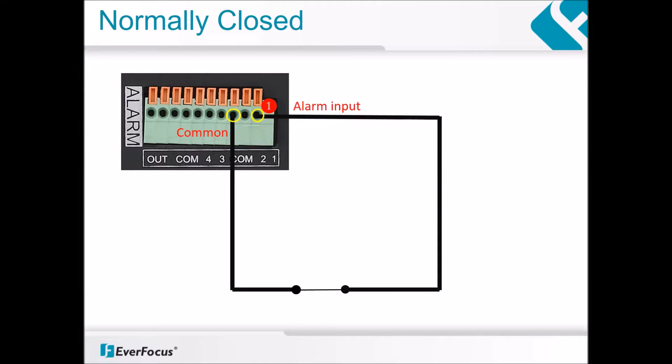In this diagram, alarm input number one is set up as a normally closed circuit. It's only when the circuit is broken or open that it triggers the alarm input. In the context of the DVR, once the circuit changes its state from normally closed to normally open, it will trigger the alarm input of the DVR.